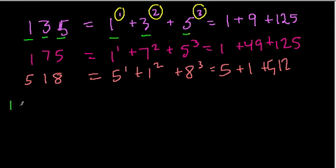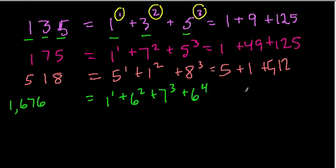So another number I can use is 1,676. In this case, this pattern continues. So we can use 1 to the 1st plus 6 to the 2nd plus 7 to the 3rd plus 6 to the 4th. And I'm not going to figure out where each of these are. I could, but the point is that if I add these up, I will get 1,676.